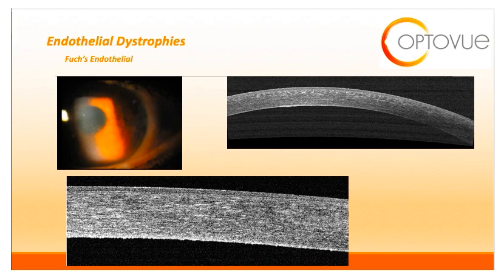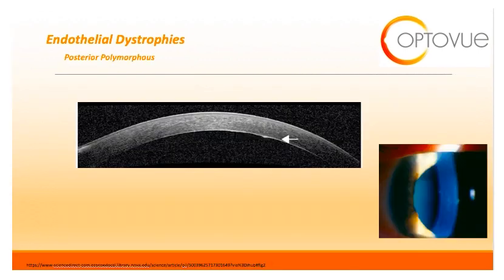Last, we have the endothelial dystrophies. The first is Fuchs, which will appear with corneal gutata and central stromal edema. On OCT, you will see nodular formations of the posterior corneal endothelium, endothelial gutata, and increased corneal thickness. The other common endothelial dystrophy is posterior polymorphous dystrophy, which appears as vesicles arranged in a linear or grouped fashion with a grayish haze and broad bands on the corneal endothelium. OCT will show a thickened hyper-reflective material on the corneal endothelium with extension into the anterior chamber.